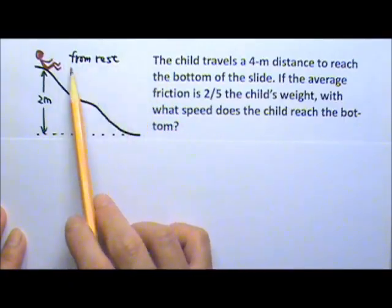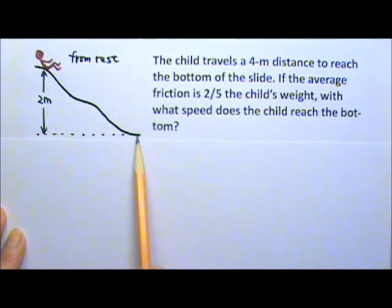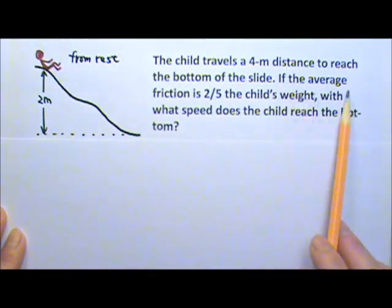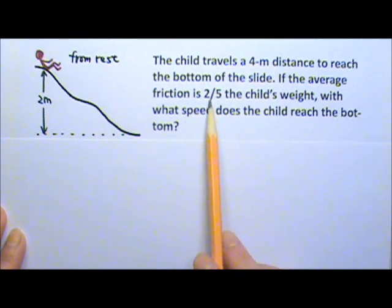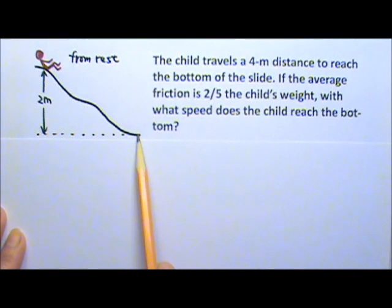The child starts from rest and travels a 4 meter distance to reach the bottom of the slide. If the average friction on the child is 2 fifths the child's weight, with what speed does the child reach the bottom of the slide?